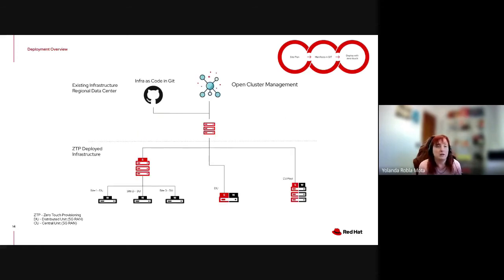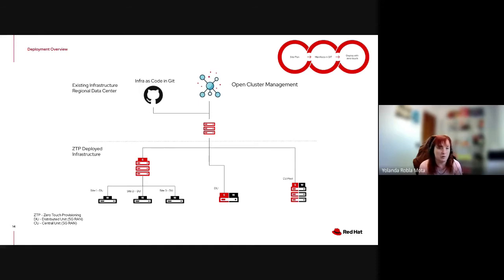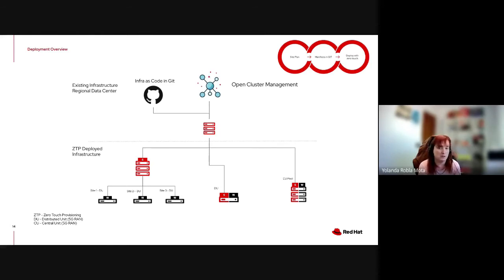Let me explain how the deployment process looks. Everything starts in git. In the regional data center we have a cluster with Open Cluster Management installed. We apply our GitOps manifests and it deploys different types of clusters: clusters with a control plane and remote worker nodes; single-node clusters where one server acts as both master and worker for the DU use case; and compact three-master clusters where masters also serve as workers. This GitOps-based approach deploys clusters with these different topologies depending on the site definition.